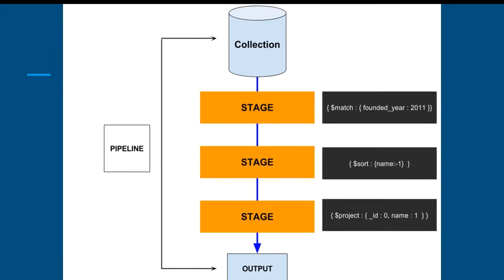Looking in a bit more detail: as input we have our collection, and we've got three stages. The first stage has a stage operator called match, the second has sort, and the third has project. The output is our transformed data. Each document in the collection passes through these different stages and then we end up with our output.